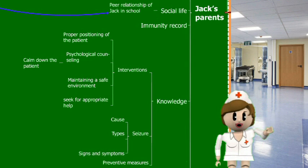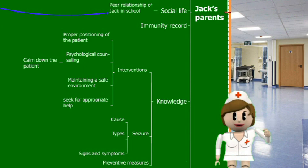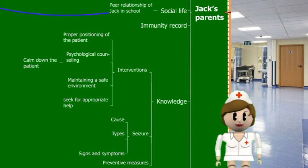We should assess Jack's social life through his parents, as Jack might be embarrassed to discuss it directly. This information helps determine which interventions to include in the care plan. We should also assess Jack's immunity record, since some brain infections can be prevented by vaccination. Furthermore, we should assess if the parents have adequate knowledge on seizure interventions, causes, types, signs and symptoms, and preventive measures — ensuring they can manage future seizures correctly to ensure Jack's safety.